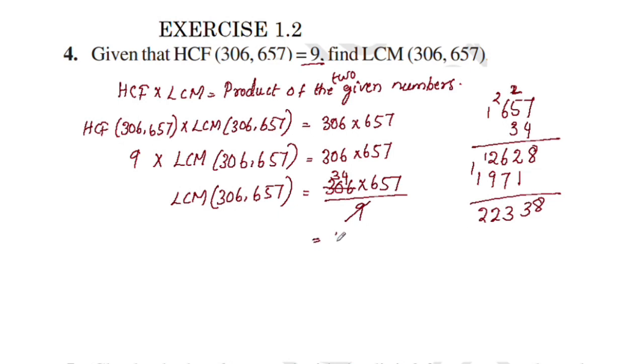This is equal to 22,338. So LCM of 306 and 657 is 22,338.